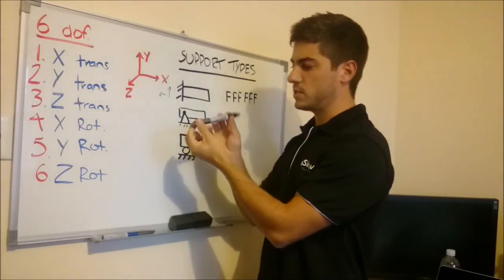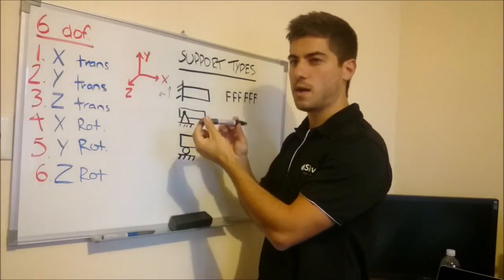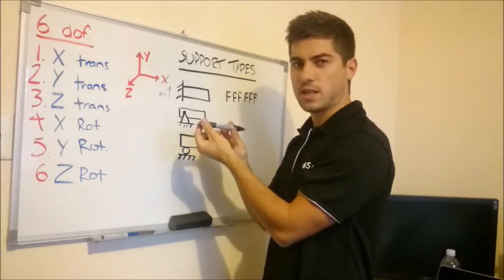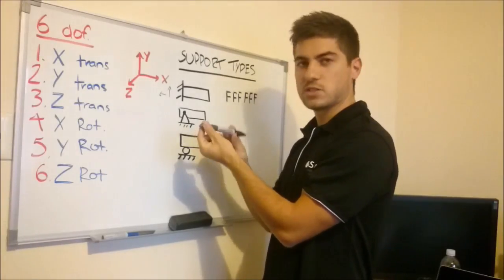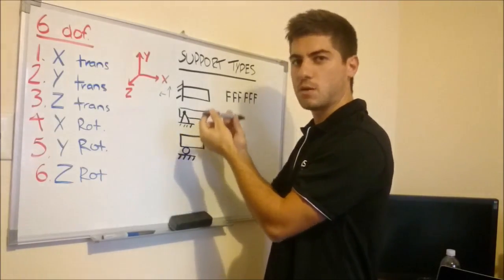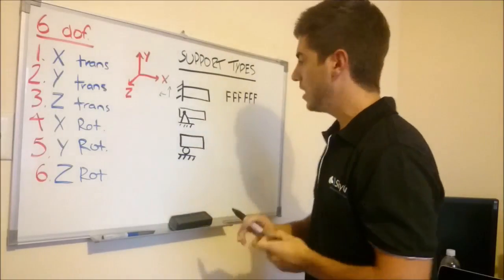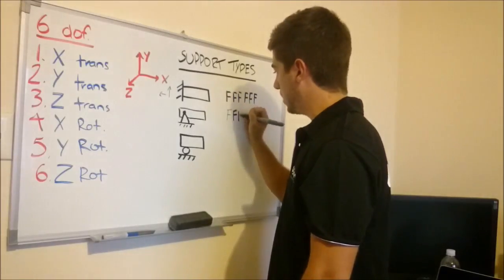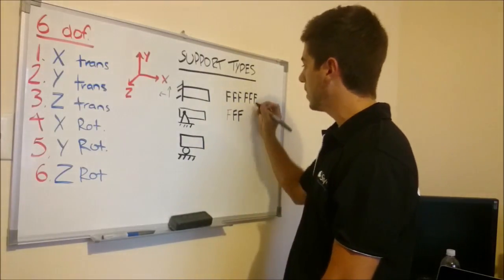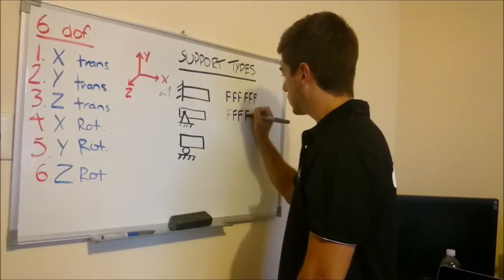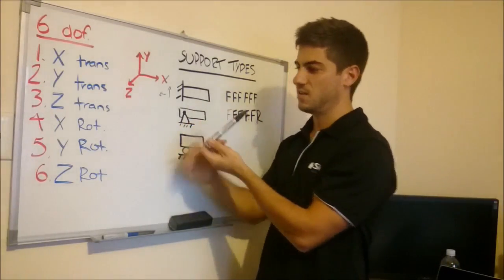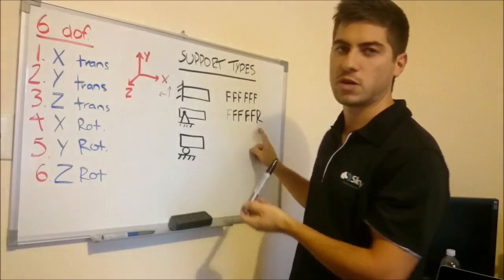The second type is a pin support, which is basically like a hinge. So the only released degree of freedom we have is in that Z rotation, where it rotates like that. It cannot rotate like that, it cannot rotate about itself, it cannot move backwards, it cannot move forwards, it cannot move up or down, you get the picture. So it's fixed in all 3 translations, because it cannot move back or forth, up or down. The only released degree of freedom is that Z rotation, that 6th degree of freedom there, that's why I put an R there.